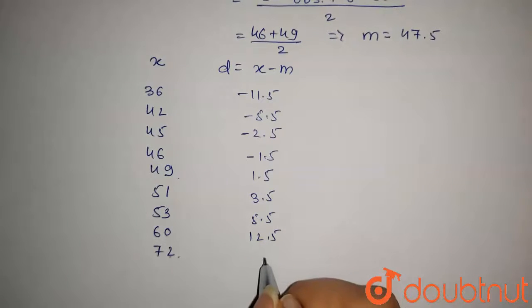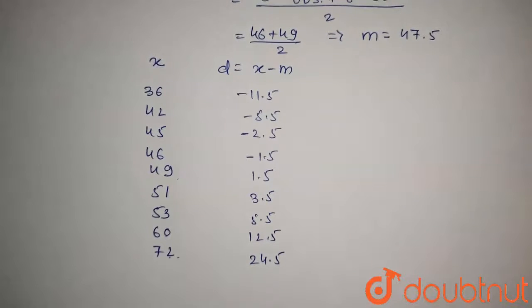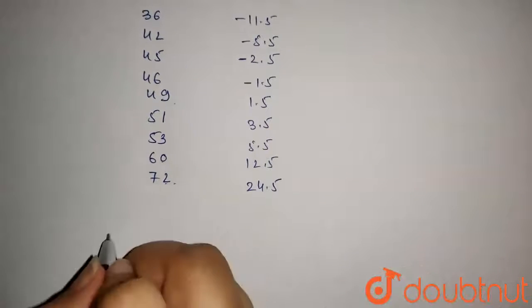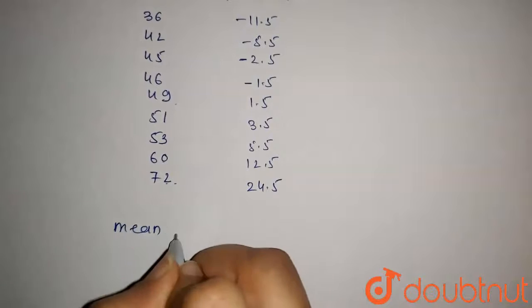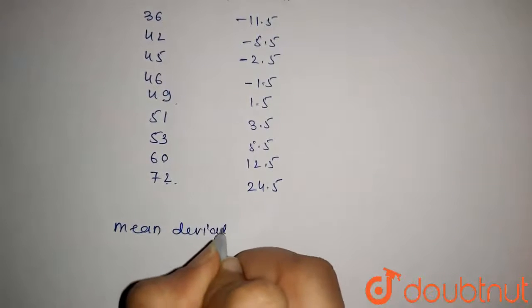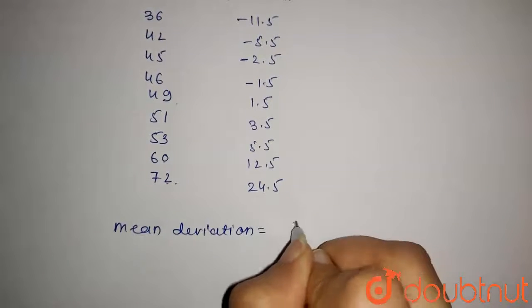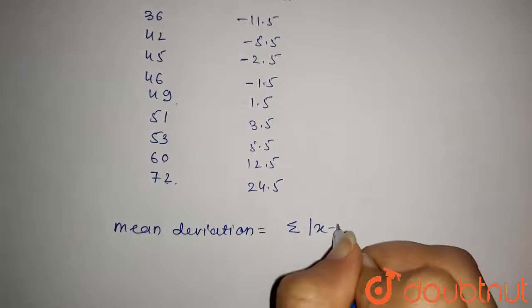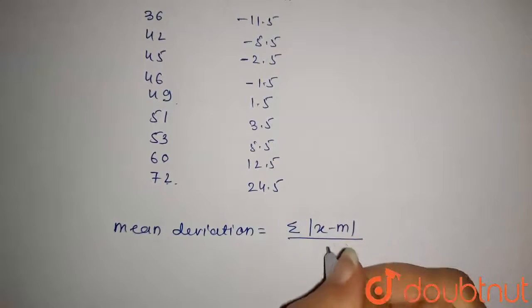72 minus 47.5 will be 24.5. Now the mean deviation formula is summation of mod of x minus m upon n.